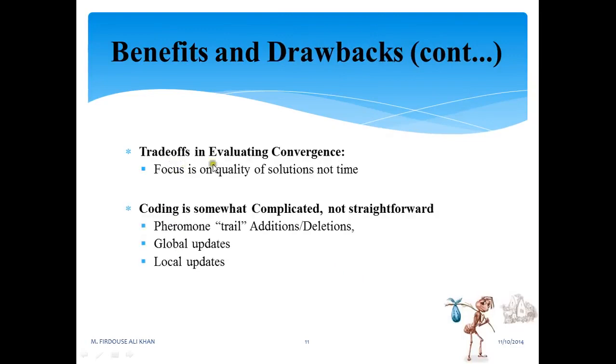There is a trade-off in evaluating convergence. It focuses on quality of solution, not time. Coding is somewhat complicated, not straightforward. Pheromone trails addition, deletions happen; global updates happen; local updates also happen. It's limited to problems that can be submitted by graphs and optimized.